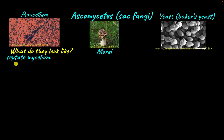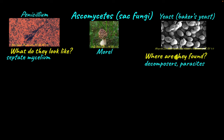Ascomycetes have a septate mycelium, which means their mycelium is interspersed with cross walls. Ascomycetes are mainly decomposers, but some are parasites. For example, Candida, which infects humans, is an Ascomycete parasite.